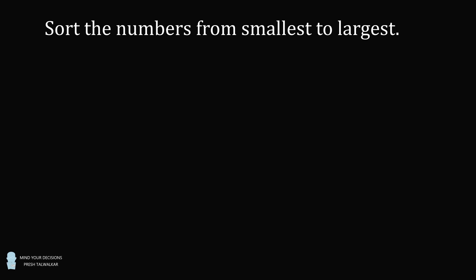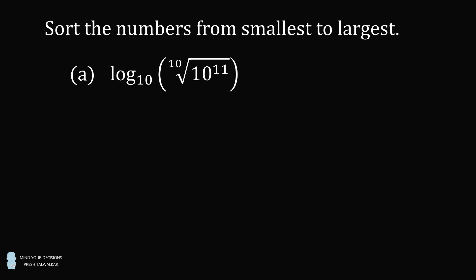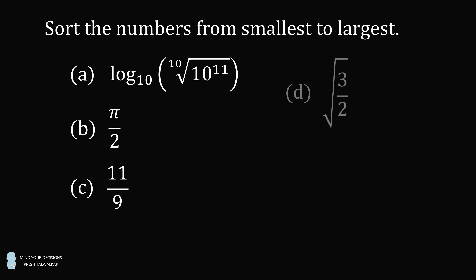Sort the following numbers from smallest to largest. A: log base 10 of the tenth root of 10 to the power of 11. B: pi over 2. C: 11 over 9. D: the square root of 3 over 2. E: the square root of 3 times the cosine of 44 degrees.